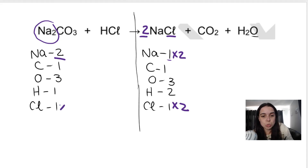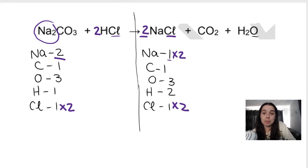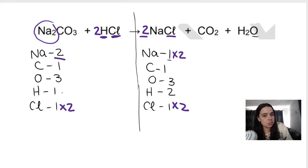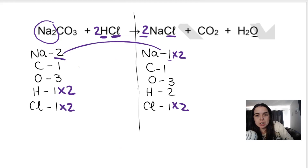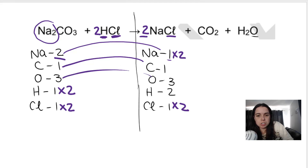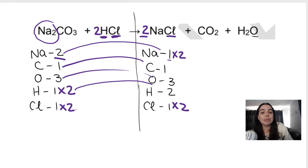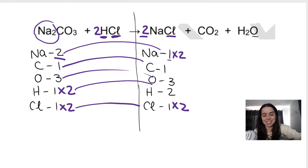Because I changed the chlorines on the right hand side, I have to balance it on the left hand side — this also needs to become two. I put a two in front of HCl, which means I've also changed the hydrogen, making it two as well. Let's check: my sodiums match — two, two. My carbons match, my oxygens match, my hydrogens match — two, two. And my chlorines match. So I've balanced it.